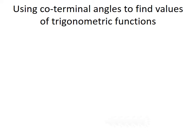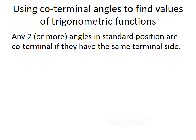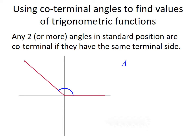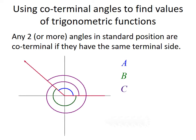Next, let's talk about using coterminal angles to find trig function values. By definition, two or more angles in standard position are coterminal if they have the same terminal side. For example, we could rotate counterclockwise to get a positive angle A, or clockwise to get a negative angle B, or go around one full revolution and continue to the terminal side for a positive angle C. All three have the same terminal side, so angles A, B, and C are all coterminal.